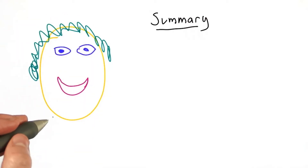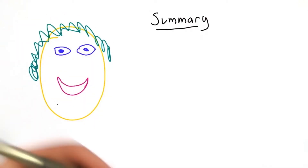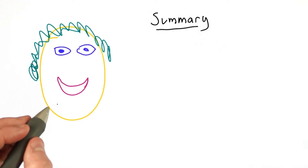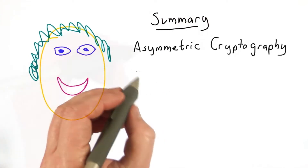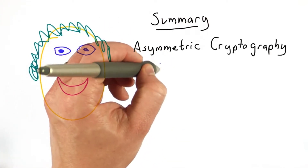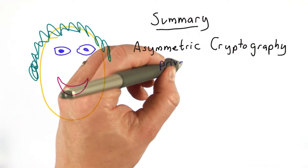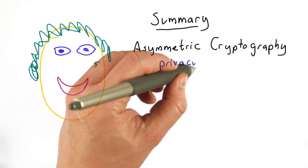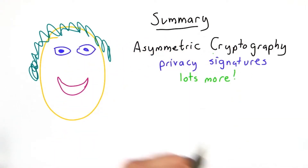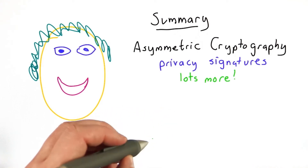I hope you've enjoyed our introduction to RSA and asymmetric cryptography. It's really a very powerful idea. In this unit, we introduced the idea of using asymmetric cryptography both for privacy and for signatures. There's lots more that we can do with asymmetric cryptography, and we'll talk about some of that in the next unit.